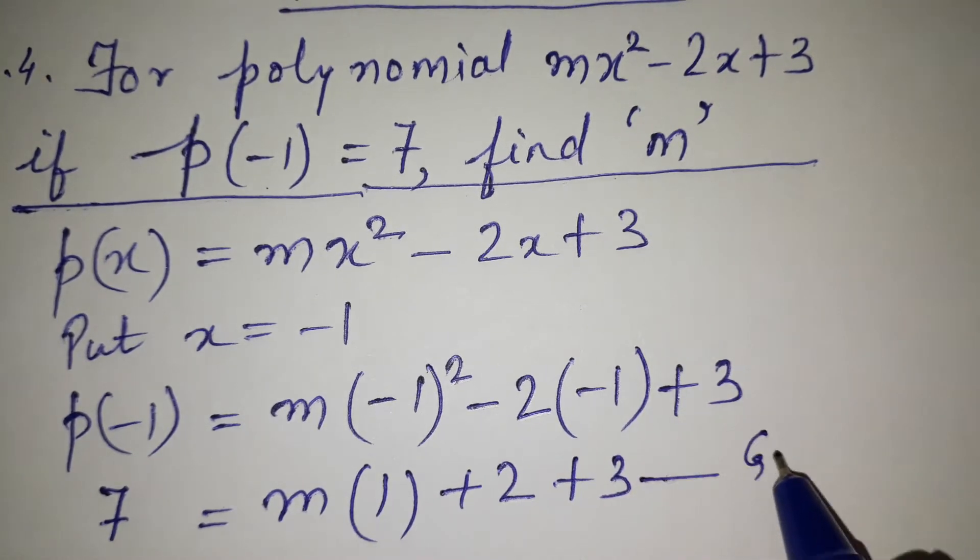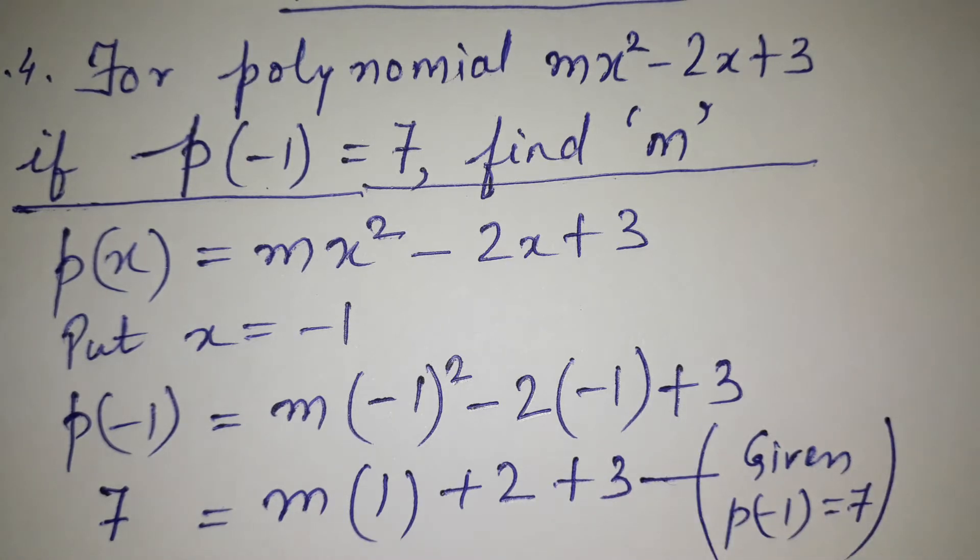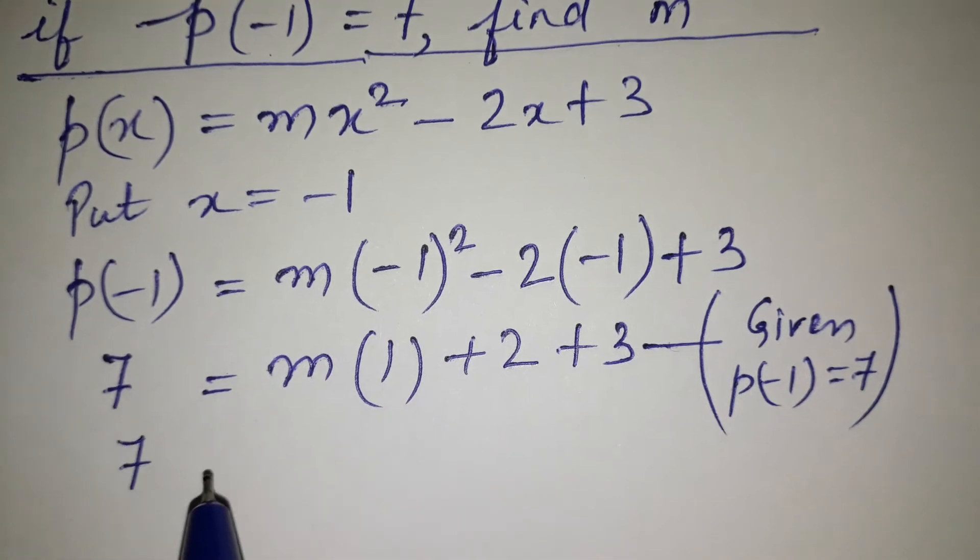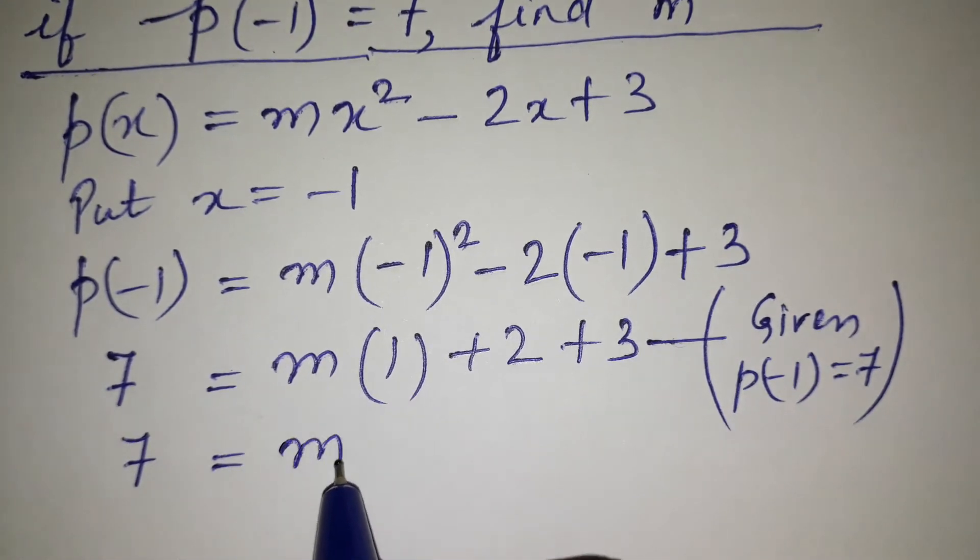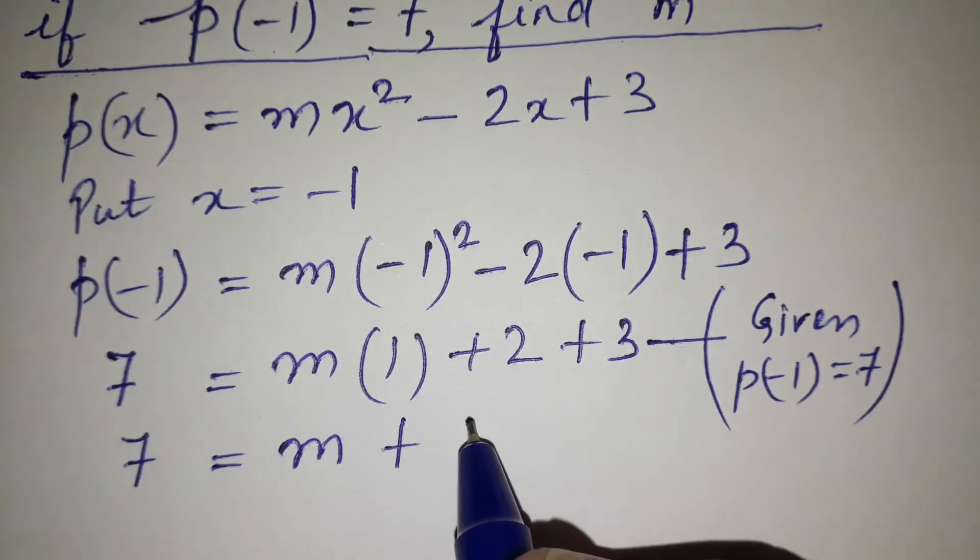So we have 7 = m(1) + 2 + 3. This means 7 = m, and 2 plus 3 is 5.